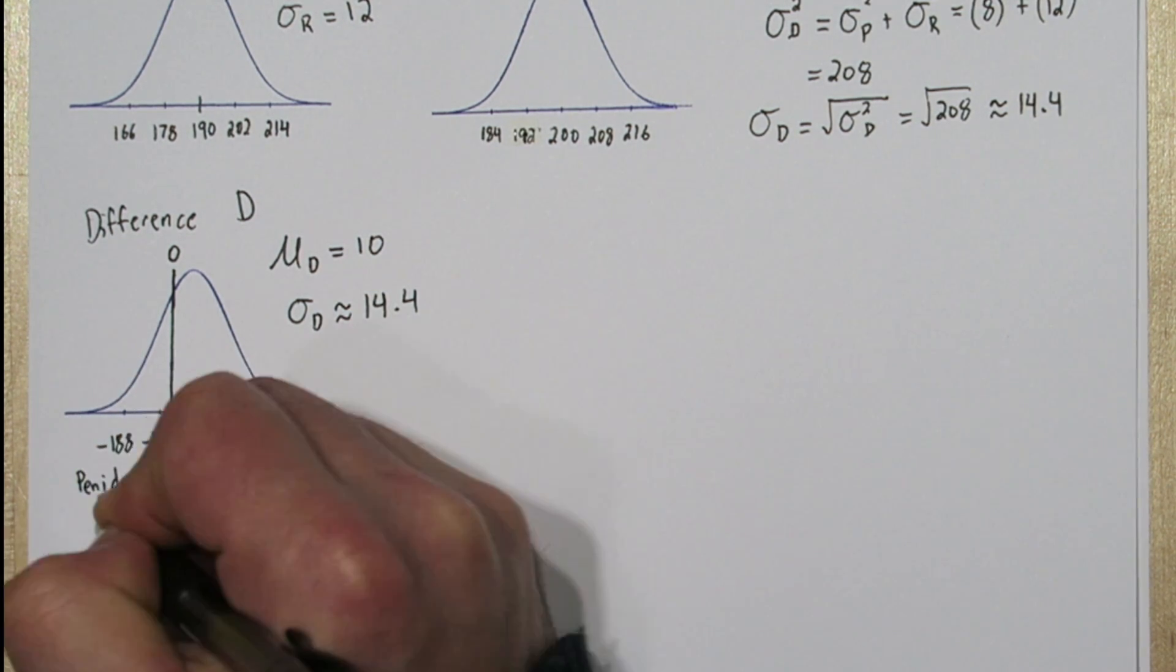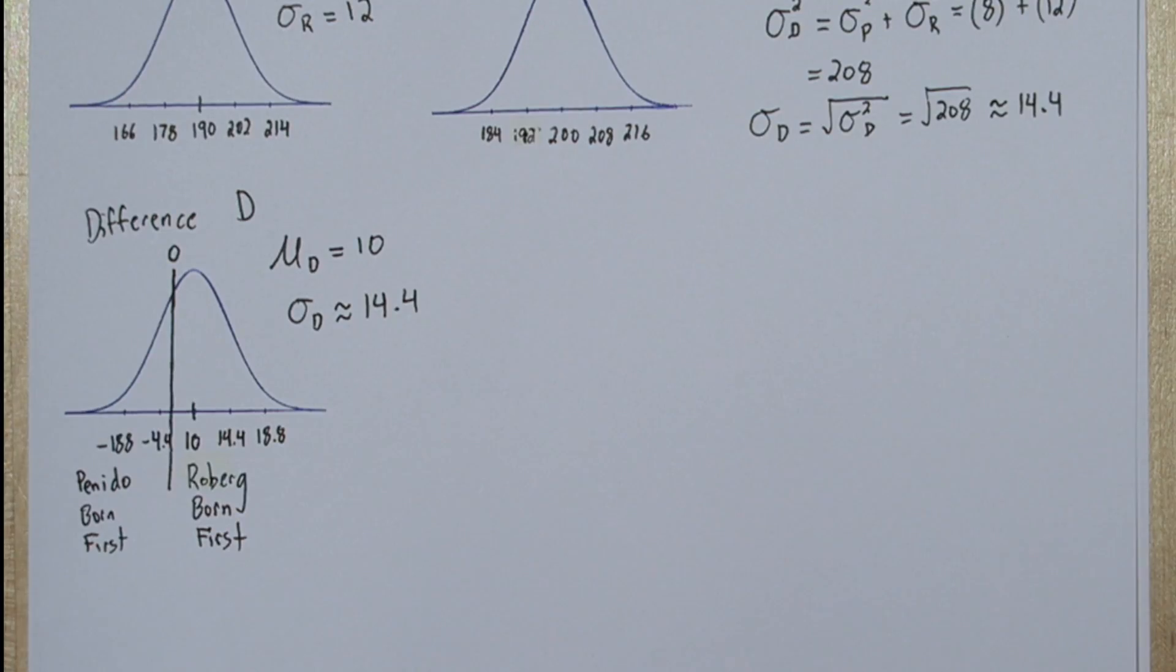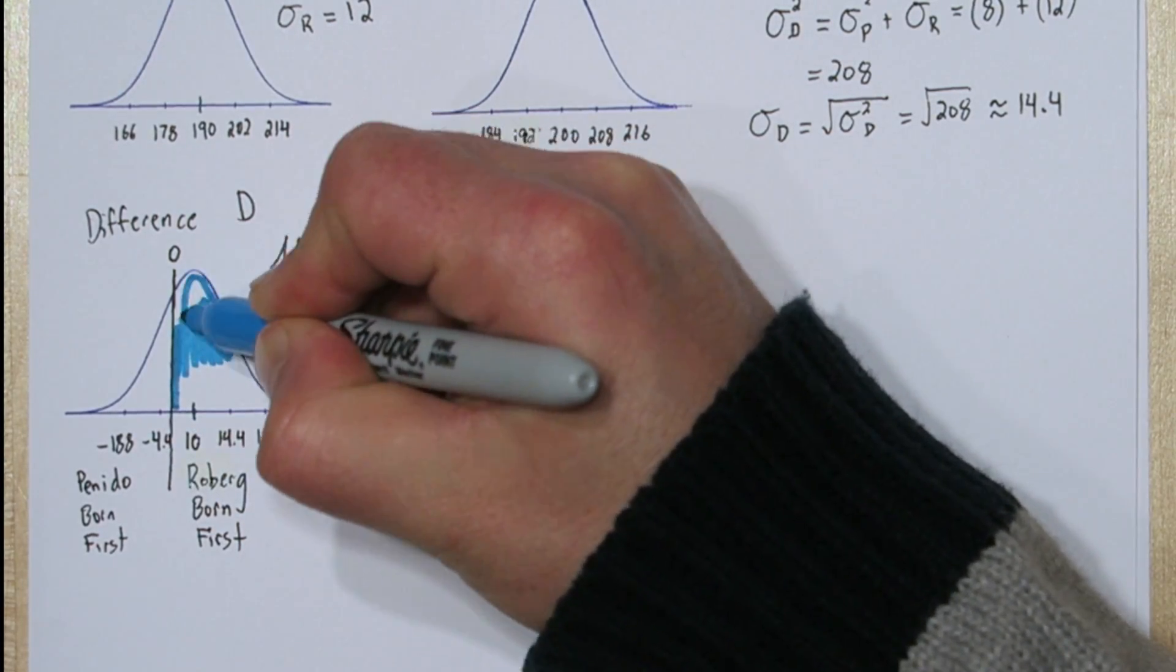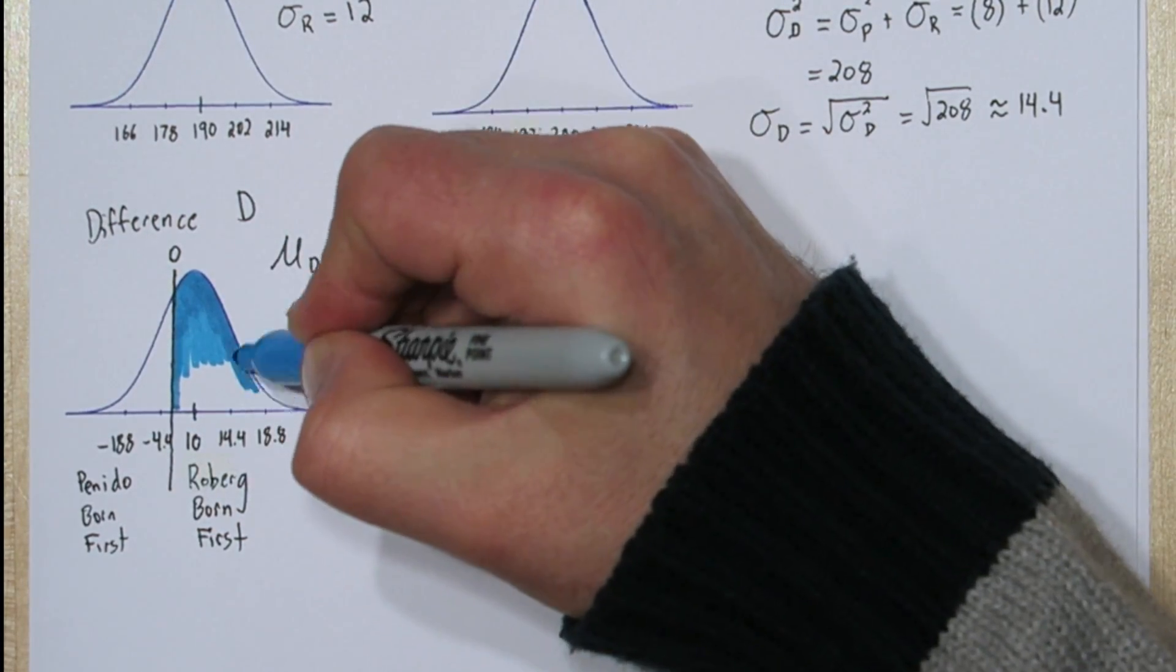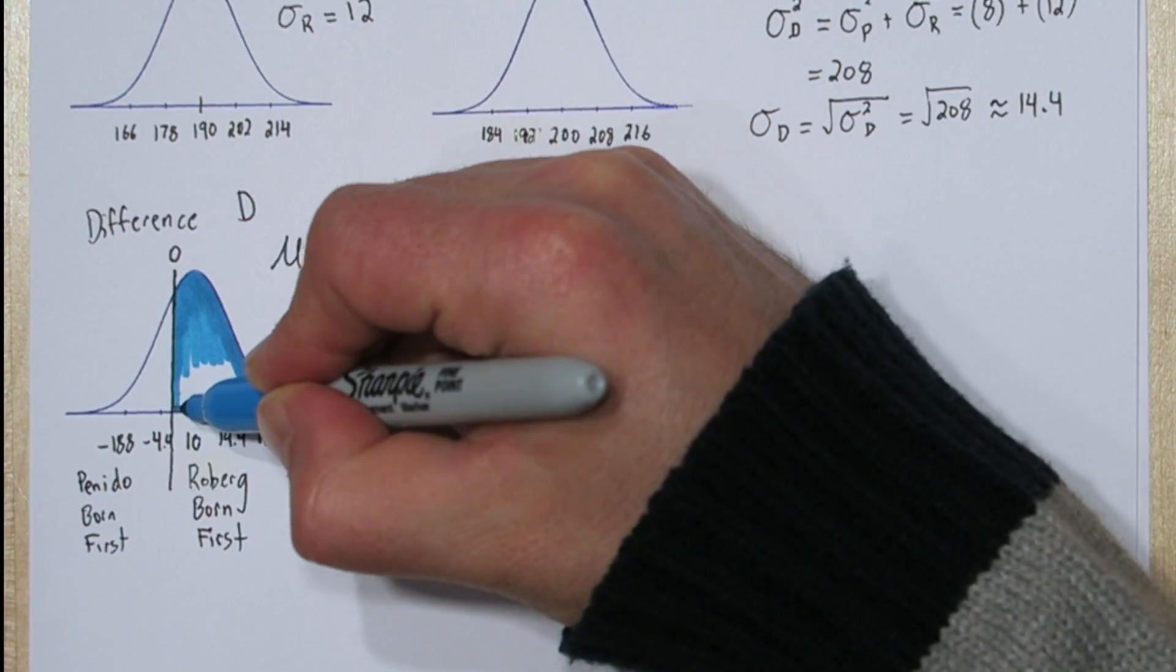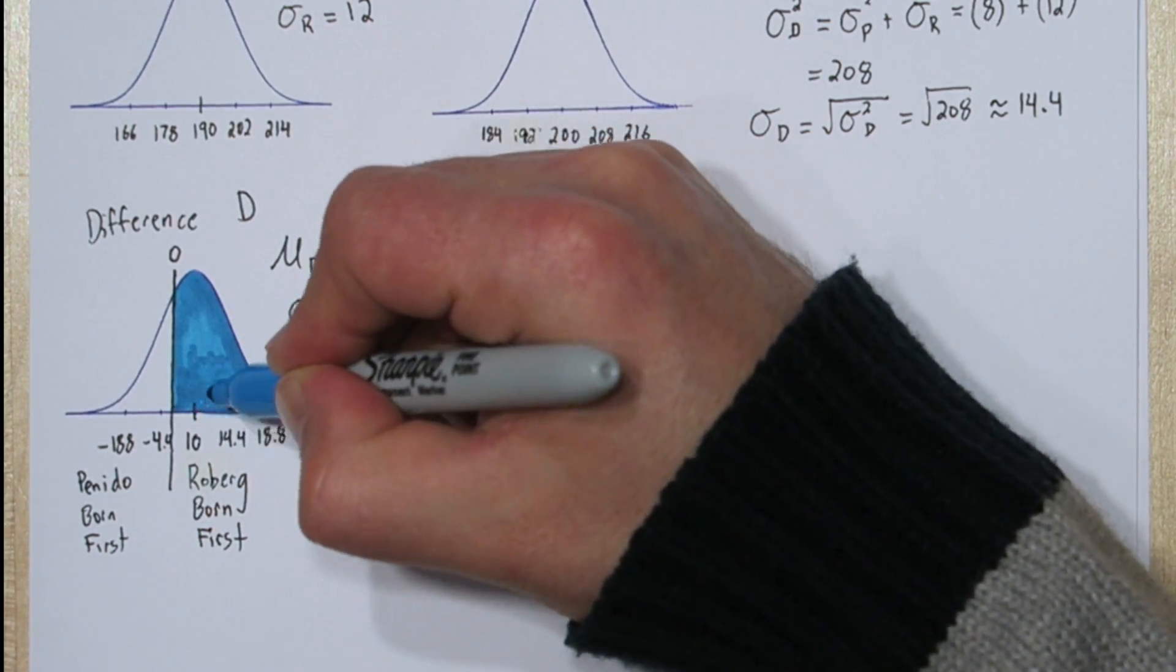And to the left of 0 would mean the Paneto baby was born first. The area under this entire density curve is 1, and the probability we're trying to find is equivalent to this area we're going to shade blue.